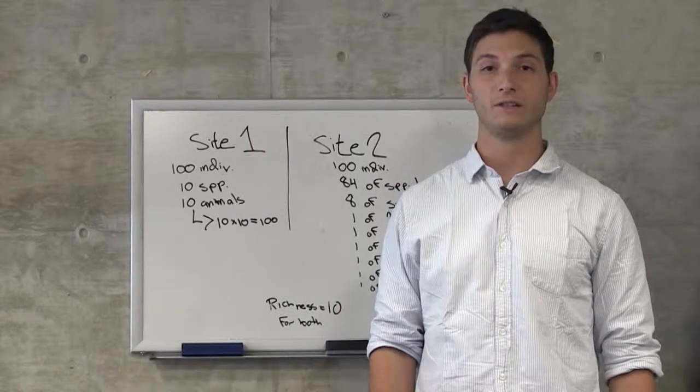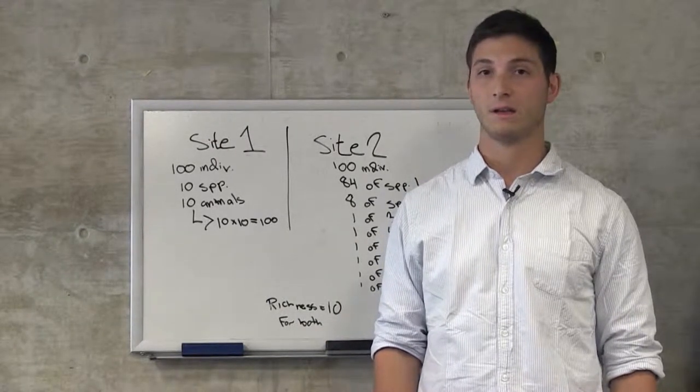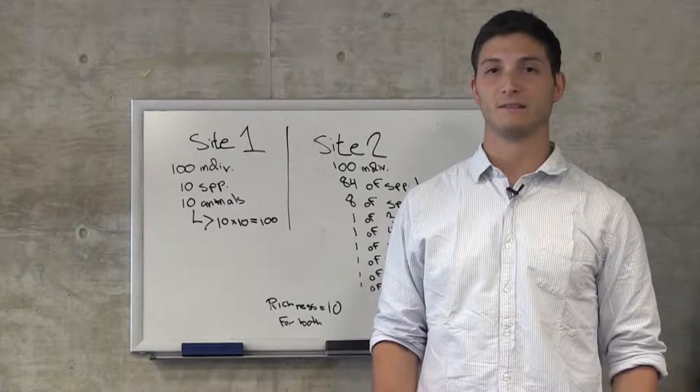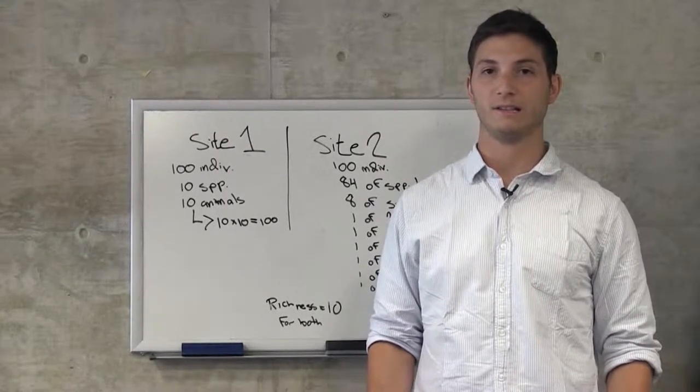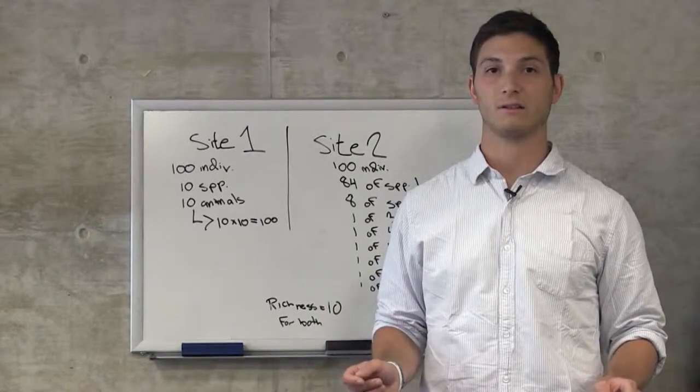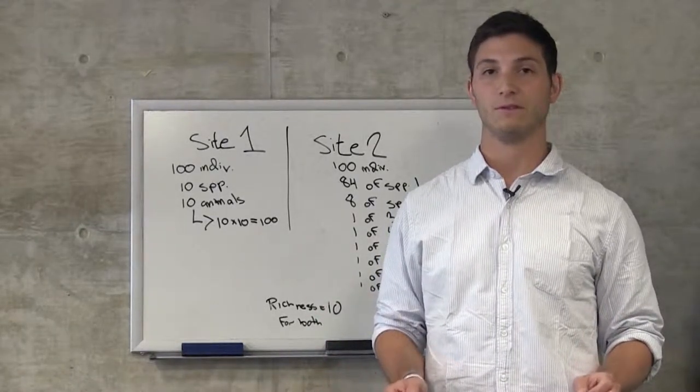Now do you see how diversity is dependent on richness and evenness? But how do we determine the index of the diversity? Well, there are several indices, but we need to realize that whichever one we use is only a relative index, or relative to the community that we observe.